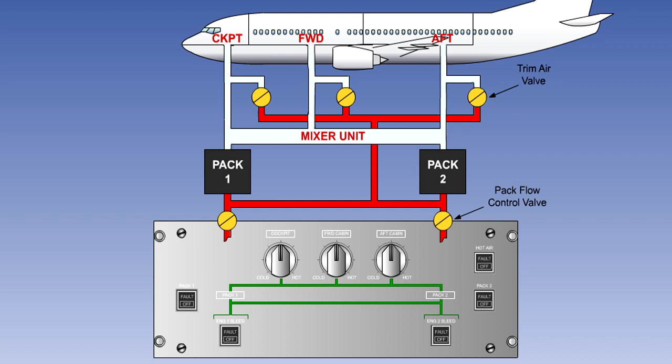Individual zone requirements are satisfied by adding hot trim air from the bleed air system to the output of the air conditioning packs. The amount of trim air added is controlled by zone trim air valves. Their positions are dependent on inputs from the individual zone temperature control systems. The trim valve for the zone requiring the coolest air will be closed. The hot air pressure regulating valve modulates to control the pressure of the trim air. If required, this valve can be closed by a switch on the control panel.